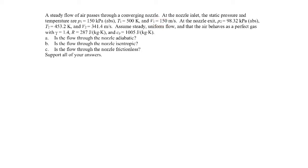At the nozzle exit, we're told the pressure, temperature and velocity there. Assume steady uniform flow and that the air behaves as a perfect gas with specific heat ratio gamma of 1.4, gas constant for air of 287 joules per kilogram kelvin, and the specific heat at constant pressure is 1.005 kilojoules per kilogram kelvin.